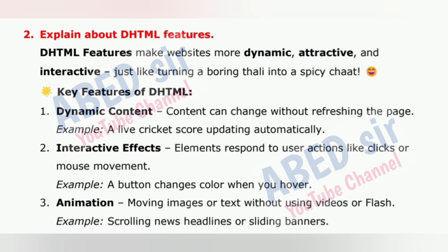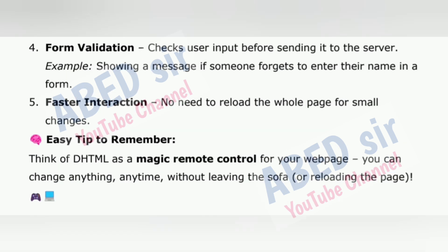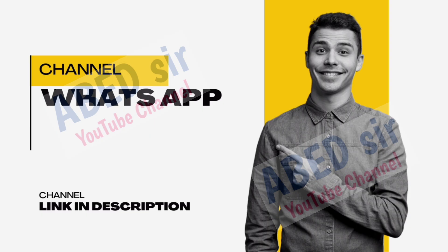2. Interactive effects: elements respond to user actions like clicks or mouse movement. Example: a button changes color when you hover. 3. Animation: moving images or text without using videos or Flash. Example: scrolling news headlines or sliding banners. 4. Form validation: checks user input before sending it to the server. Example: showing a message if someone forgets to enter their name in a form. 5. Faster interaction: no need to reload the whole page for small changes. Easy tip: think of DHTML as a magic remote control for your webpage — you can change anything anytime without leaving the sofa or reloading the page.